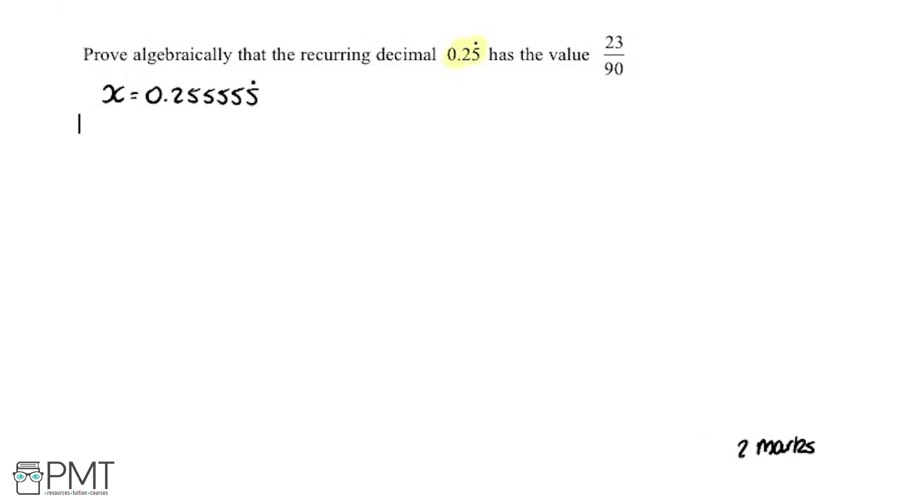If we've got x here, what I'm now going to do is write 10x. We're going to multiply both sides by 10. Multiplying this side by 10 we get 10x. Now we've got to multiply this side by 10, so that will give us 2.5555... recurring.